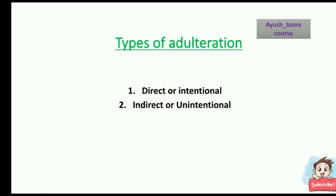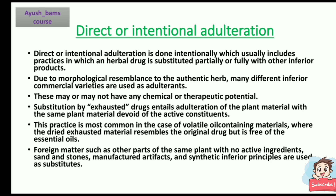Types of adulteration: first is direct or intentional adulteration, and second is indirect or unintentional adulteration. Direct adulteration is done intentionally — it includes practices where an herbal drug is substituted partially or fully with other inferior products due to morphological resemblance to the authentic herb. Many different inferior commercial varieties are used as adulterants, which may or may not have any chemical or therapeutic potential.